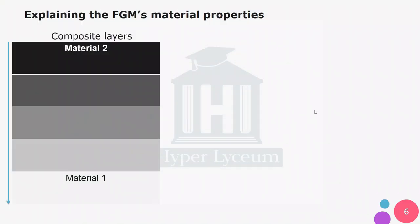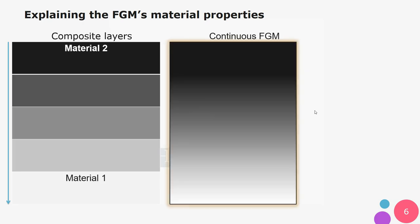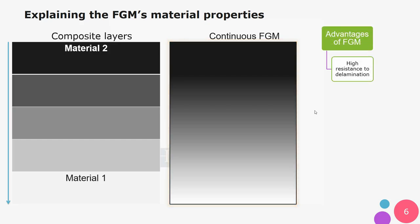The picture on the left shows the structure and layers of a composite — each layer has its own specific mechanical properties. The center picture shows the structure of an FGM, where properties are modified slowly and gradually. This gradual modification of FGM's mechanical properties brings many advantages, one of which is high resistance to delamination, since properties change gradually rather than abruptly as in composites.